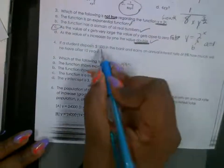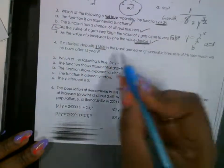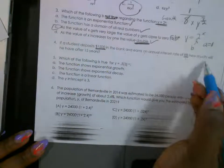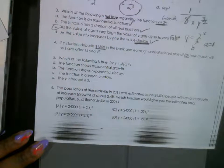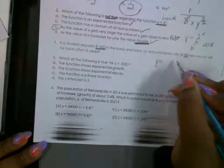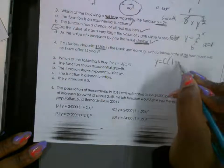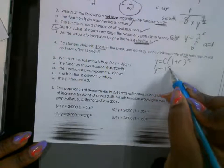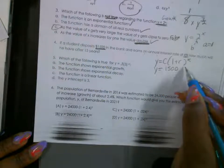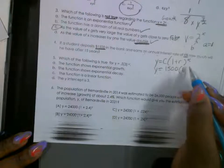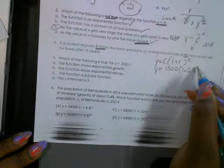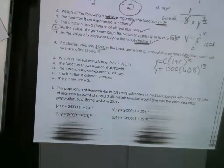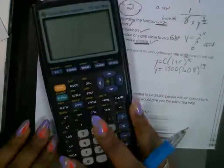If a student deposits, this is the deposit, 1,500 in the bank, and earns an annual interest rate of 8%, how much will he have after 15 years? This is exponential growth. Y is equal to c, parentheses, 1 plus r to the x power. So this is going to be y is equal to 1,500, 1, and 0.08 is 8%, and it's going to be 15 years. Okay. So now we type this in the calculator.